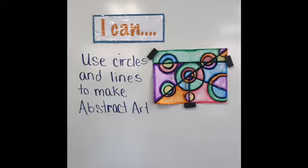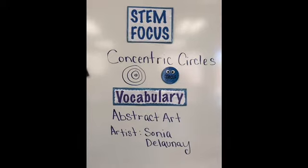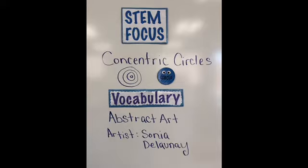Today in art we are going to use circles and lines to make this abstract art design that you see. The circles we're going to talk about are called concentric circles and these are circles that repeat around each other and share the same center point. We're also going to be introduced to artist Sonia Delaunay.